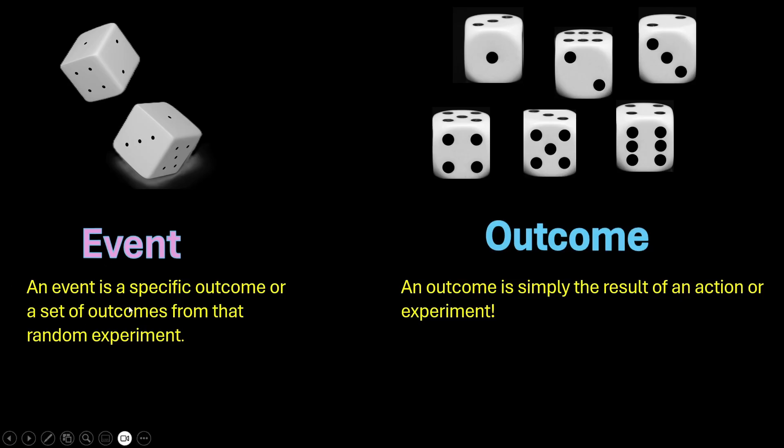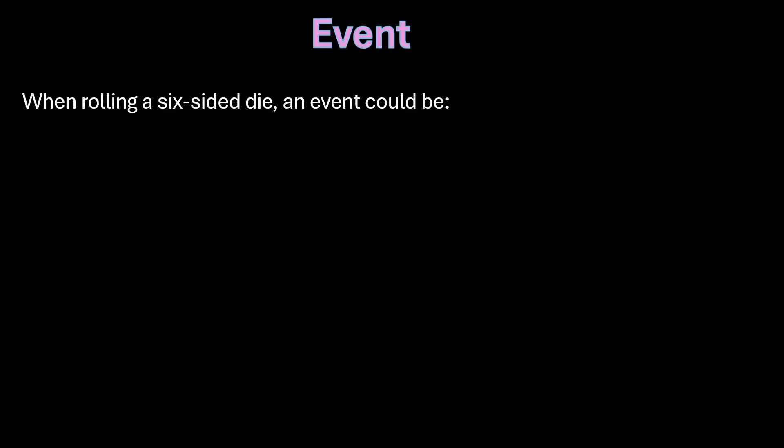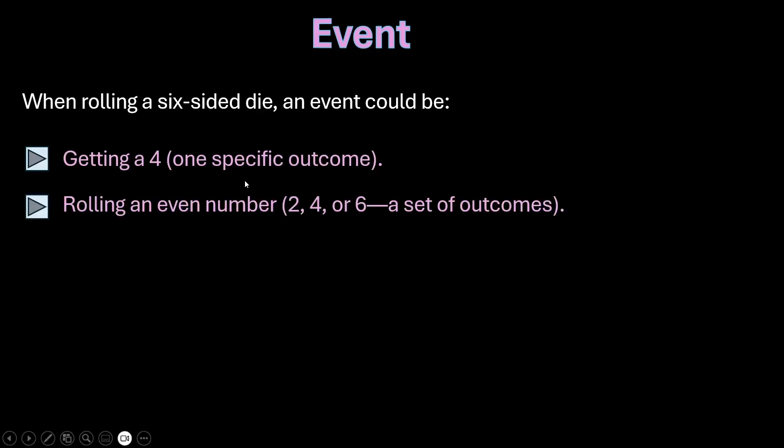Let us try to understand event better using this example. Let us take the example of rolling a six-sided die. Rolling a six-sided die is a random experiment. What could be an event? An event could be getting a 4 which is one specific outcome or rolling an even number on a die, which can have a set of outcomes 2, 4 or 6. Similarly, an event could be getting a number greater than 2, which again has a set of outcomes.